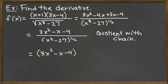we'd have x cubed minus 27 raised to now the negative one half power because I brought it from the bottom. But here this would require product with chain.